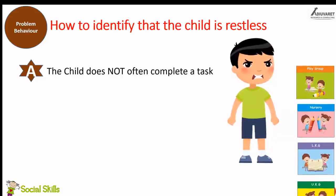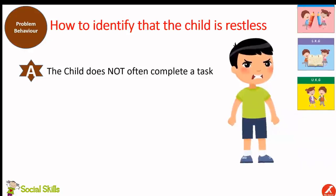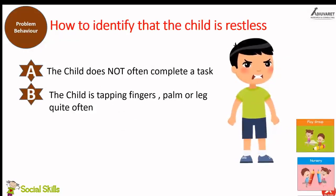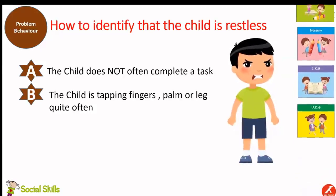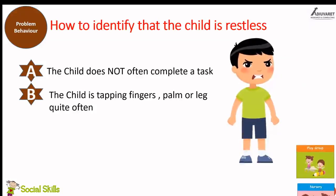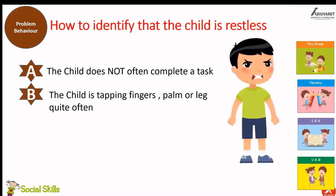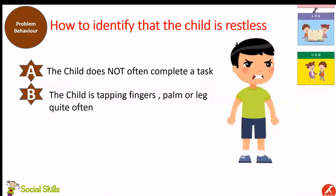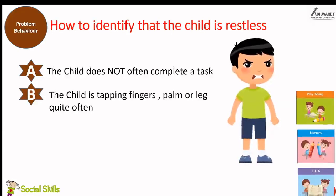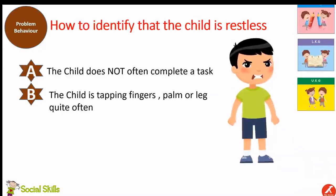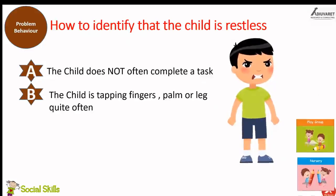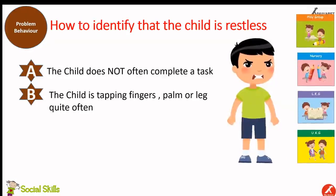As parents and teachers, we have to ensure that a given task is completed by the child. If it is not completed, take note and discuss it in the right forum so that necessary action can be taken. The second symptom could be that the child is tapping fingers, palm, or leg quite often. This shows the child is not calm and quiet at the cognitive level — something is going on in the child's mind, manifesting as tapping.